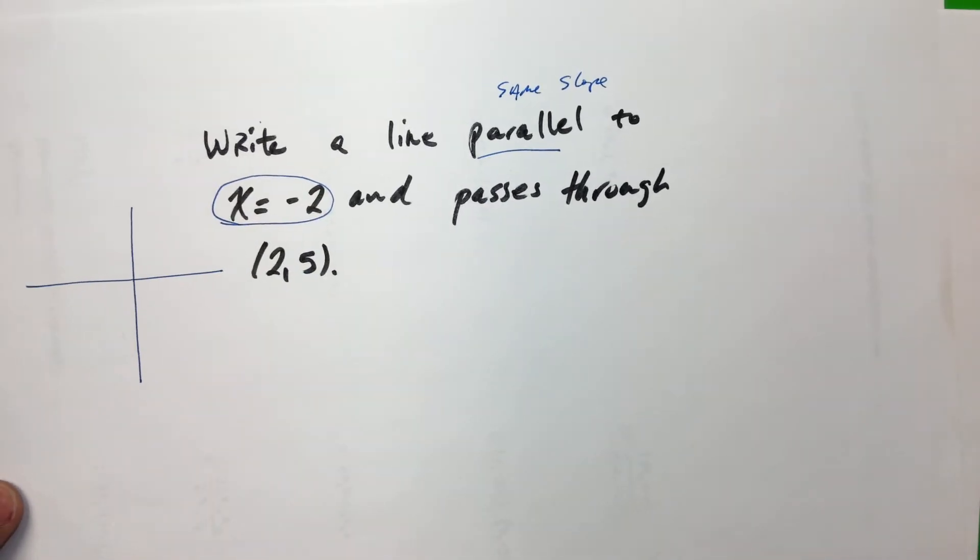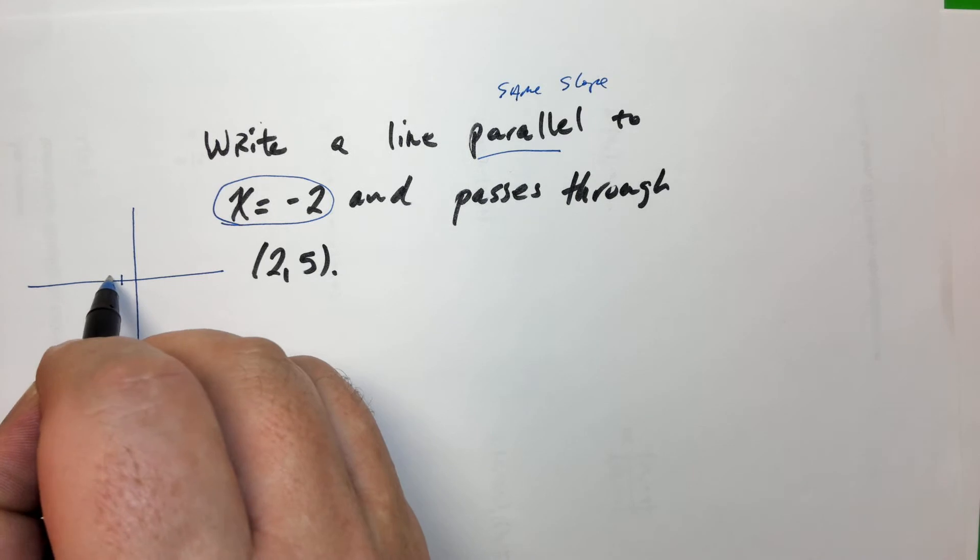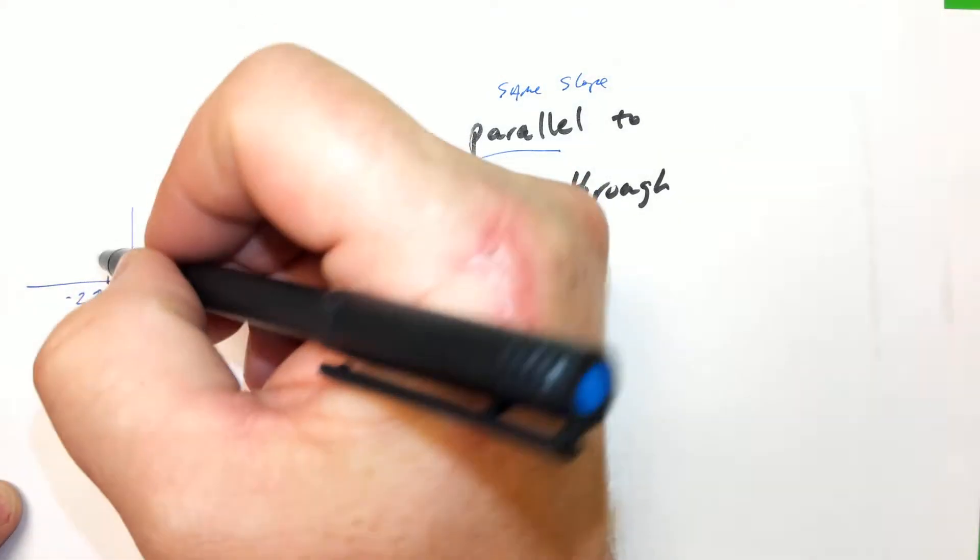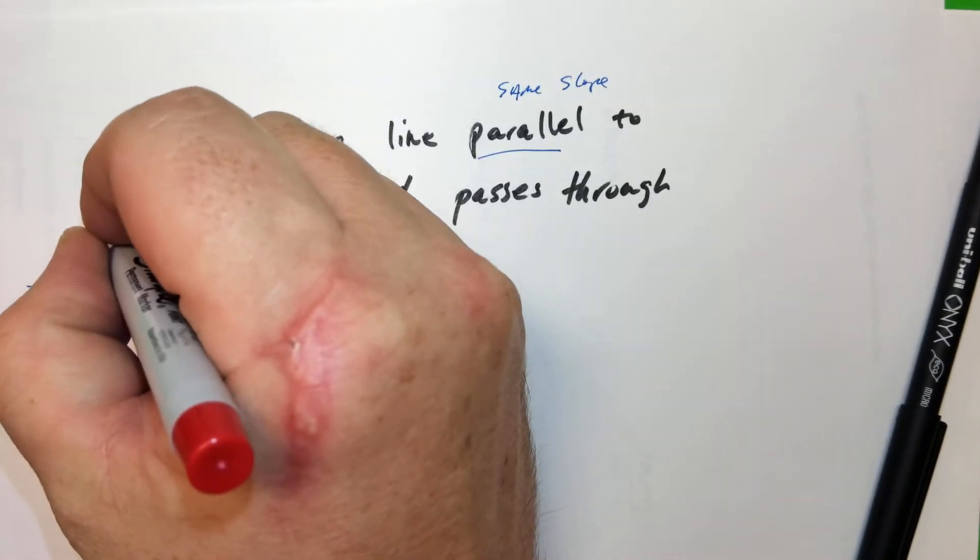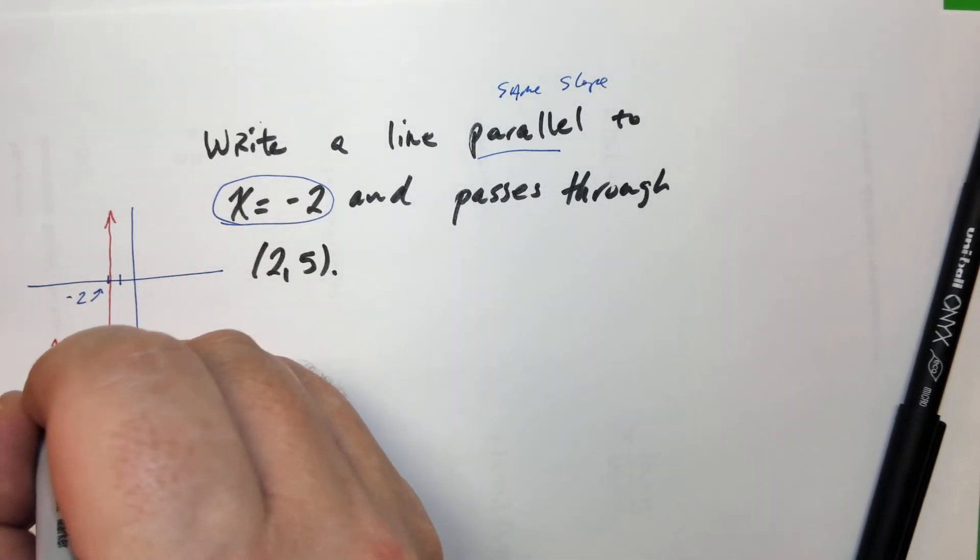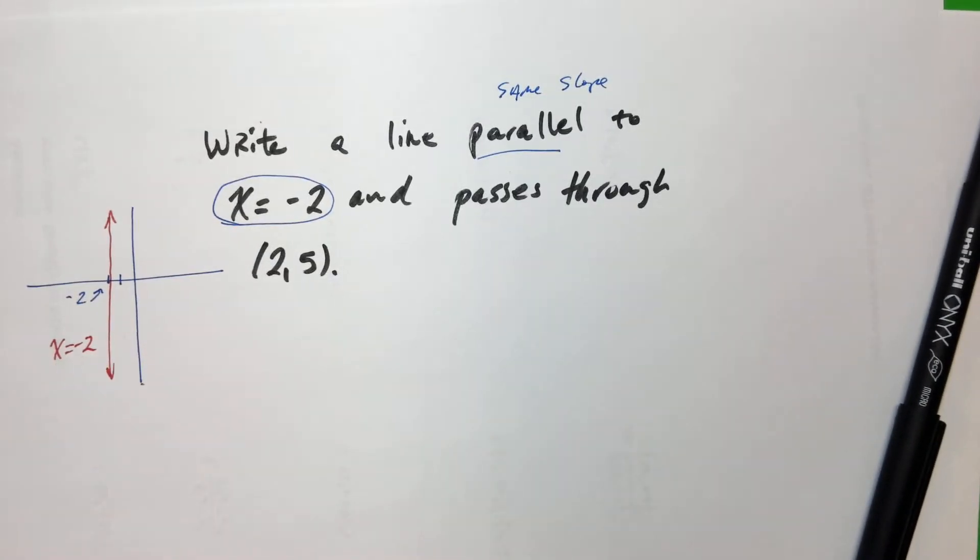x equals negative 2. Let's see. There's x equals negative 1. That's x equals negative 2 right there. This is a vertical line. That's x equals negative 2 right there. Its slope is undefined. The slope is undefined.